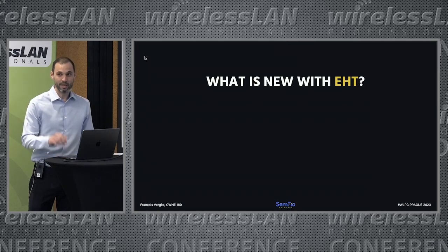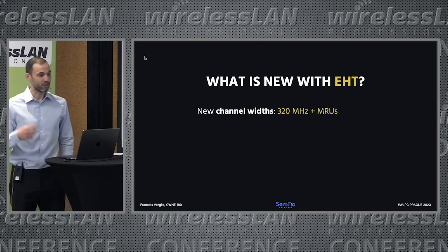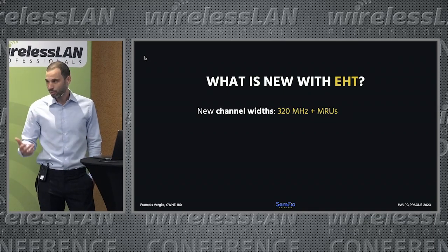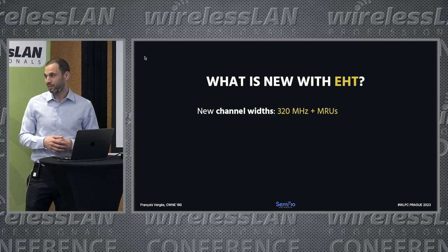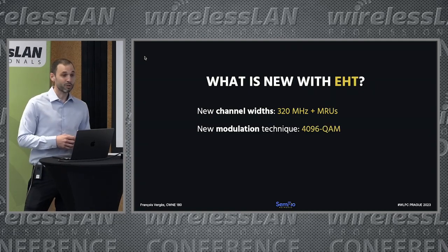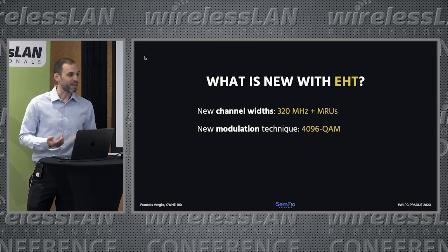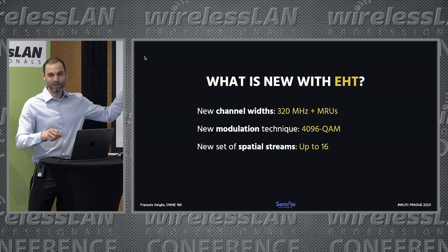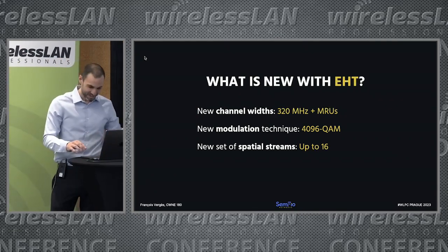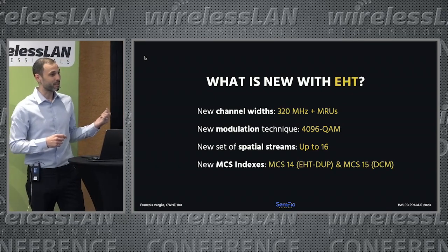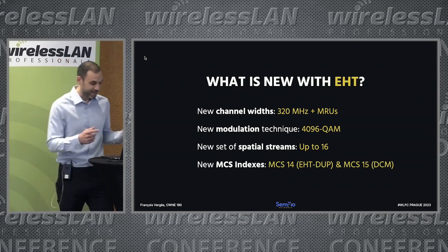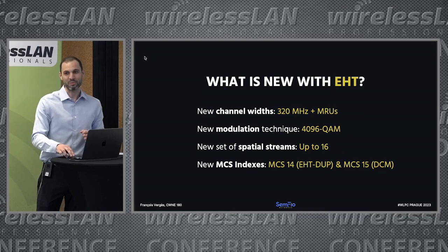So what is new in EHT that impacts the data rates? We pretty much have two things that can directly impact us. We have the new channel widths — the 320 megahertz wide channels — and we have the MRUs that David talked about yesterday. We also have the new modulation technique, 4K QAM, and the draft introduced a couple more MCS indexes. We'll also talk about spatial streams — up to 16 — and they introduced MCS 14 and MCS 15.